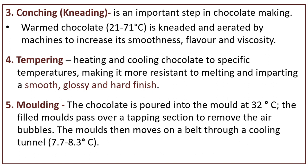Conching or netting: it is an important step in chocolate making. Warm chocolate at 21 to 71°C is kneaded and aerated by machines to increase its smoothness, flavor, and viscosity. Tempering: heating and cooling chocolate to specific temperatures, making it more resistant to melting and imparting a smooth, glossy, and hard finish — that is known as tempering.